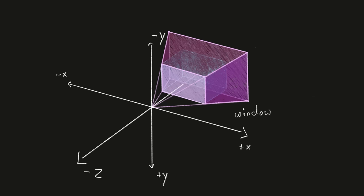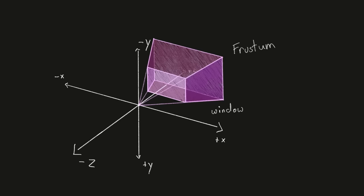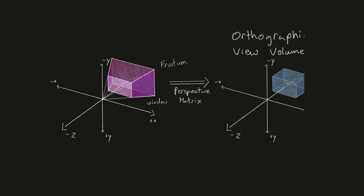So what we want is a perspective matrix that transforms the frustum and any object it contains into the orthographic view volume. Doing so would apply perspective to all objects within this space. The farther away an object is, the smaller it will appear. To properly apply perspective, we need to project each point onto the viewing plane.